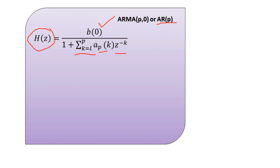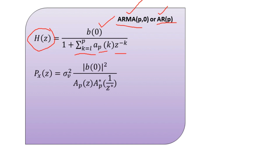AR is the abbreviation for auto-regressive, and this is a special case derived from ARMA. With respect to the input and output, we can represent the power spectral densities. The power spectral density P_X(Z) in the Z-domain is computed as the variance σ²_xV times the ratio of |B(0)|² in the numerator, divided by A_xP(Z) times the conjugate of A_xP(1/Z*).